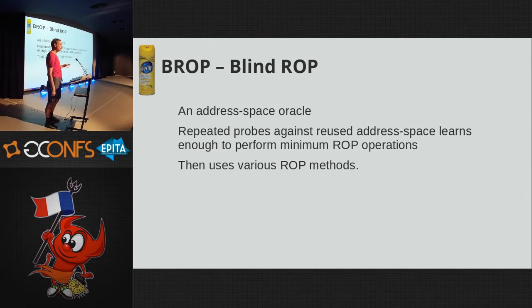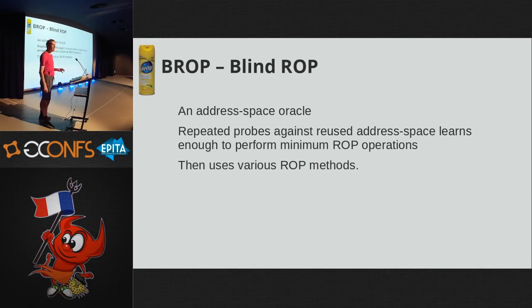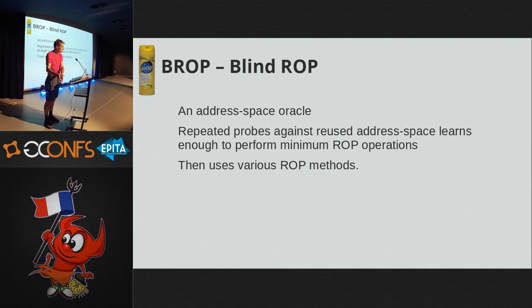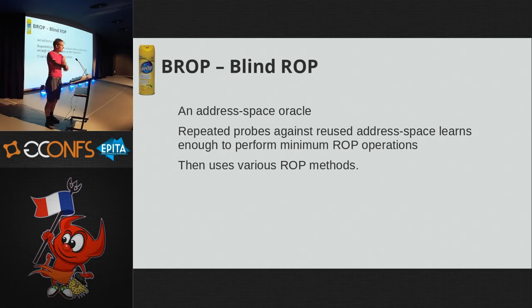Blind ROP is based on the observation that learning about the address space needed for ROP works as an address space oracle, and it works specifically against address spaces which have been reused. If you take a process and fork a copy, it has the same layout. If the child dies and the parent keeps creating a new child with the same memory layout, that is when BROP comes into play. Across a socket, the attacker first finds a way to crash the program, then searches for a payload that makes the program spin, giving him two distinct behaviors: stop and spin.